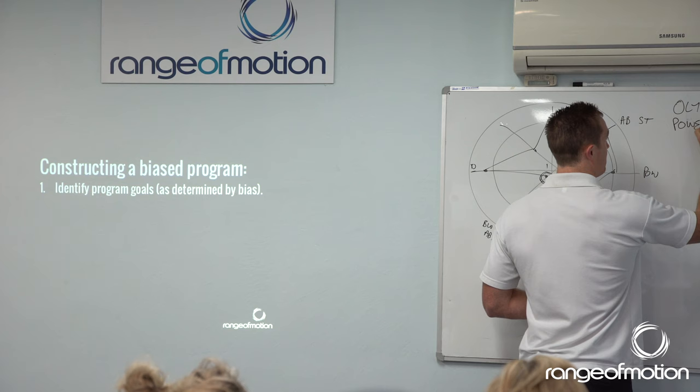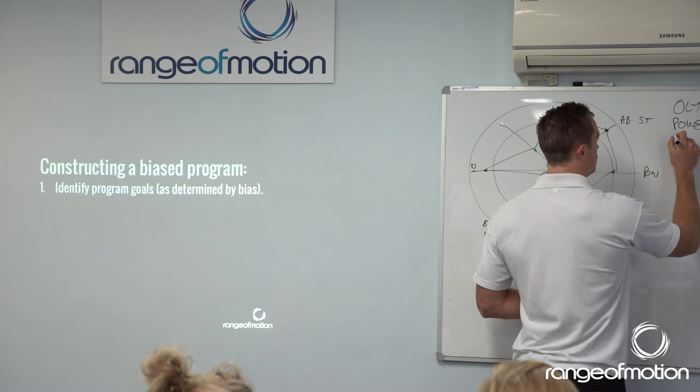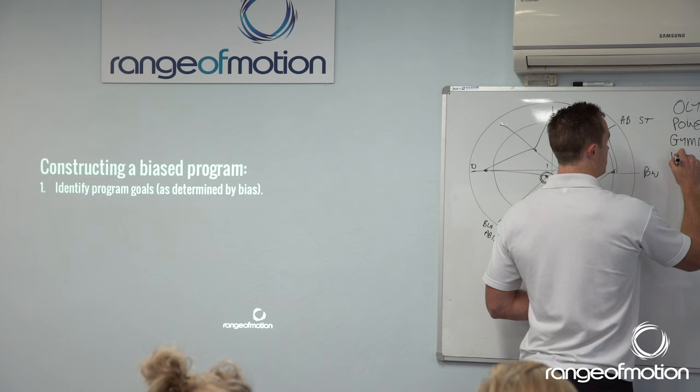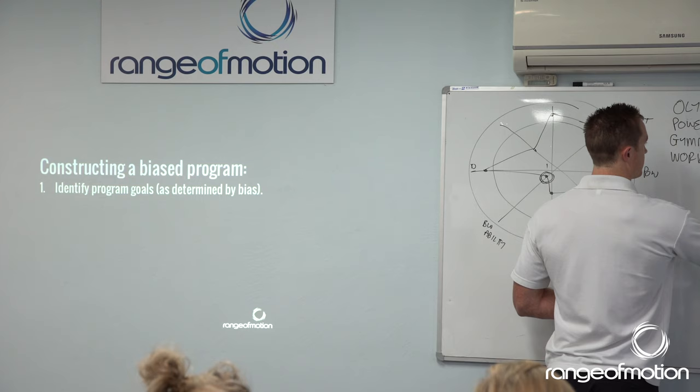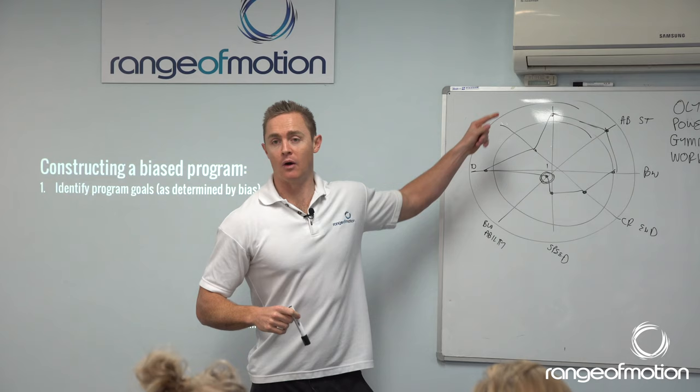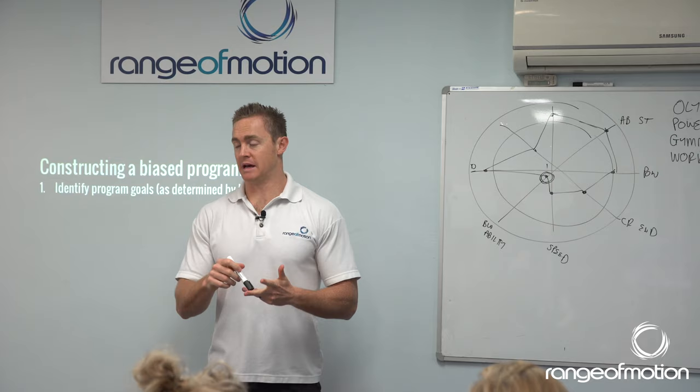We're gonna talk about your gymnastic or body weight ability, and we're gonna talk about your work capacity. Those are gonna be the four areas. So to simplify this, our wagon wheel now contains four spokes: Olympic lifting, powerlifting, your gymnastic or body weight ability, and your cardiorespiratory endurance.